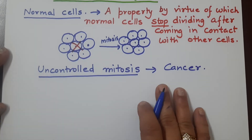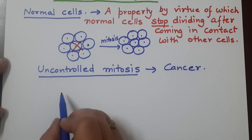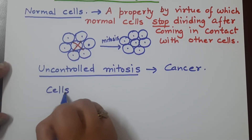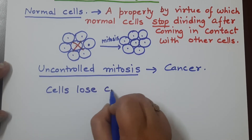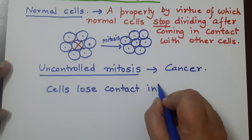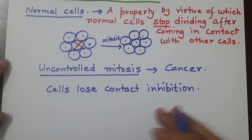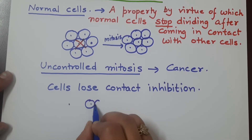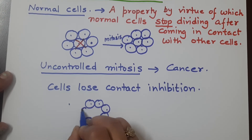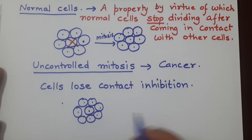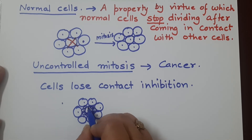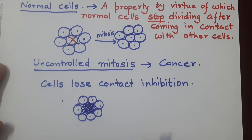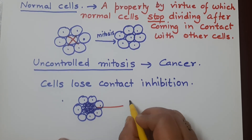In the case of normal cells they have this property, but cells which lose this property called contact inhibition start dividing continuously — they keep dividing. That becomes uncontrolled cell division. Even after coming in contact with other cells, this cell does not stop; it keeps on dividing. More and more cells are produced, cells become smaller in size, but their number keeps growing, and this structure is now known as a tumor.